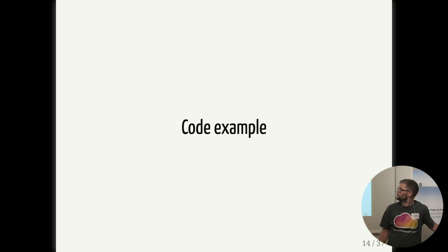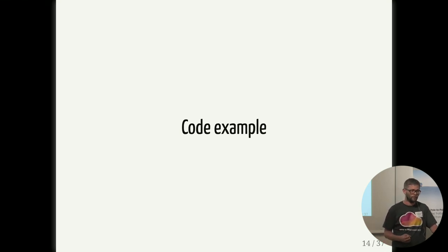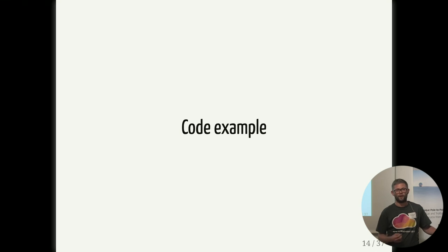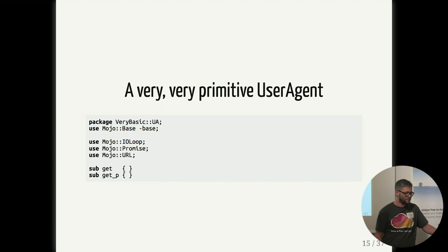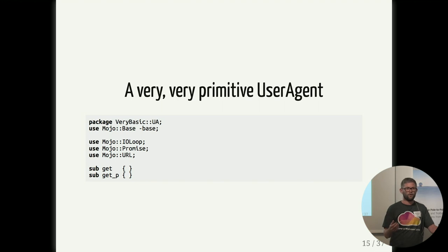Now I'm going to give some code examples for how to write a module. The core components here are Mojo::IOLoop and Mojo::Promise, which are also core components of the Mojolicious framework - I like to say Modulicious framework instead of web framework because it can do a lot of other things than just web. This example is a very, very primitive user agent, so don't run this code at home and certainly not in production. It's not a replacement for Mojo::UserAgent. I was thinking about using HTTP because I think that's a protocol everybody has heard about.